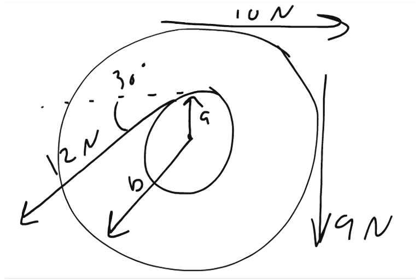Number 2 says find the net torque on the wheel in the figure below about the axle through O perpendicular to the page, taking A equals 7 cm and B equals 21 cm.